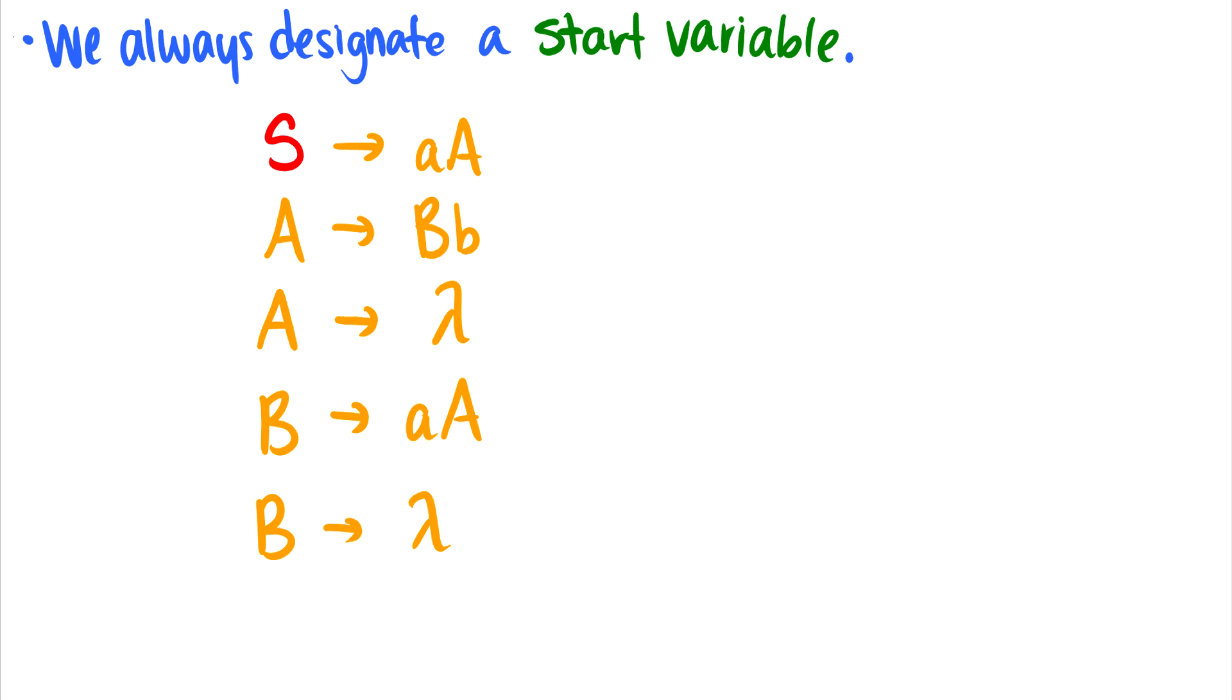There's a couple important things with context-free grammars. The first important thing is that we always have to designate a start variable. So that is what we start the derivation with. In this case, it's S, and usually I will use S for a start variable, but we could start it with anything we want.